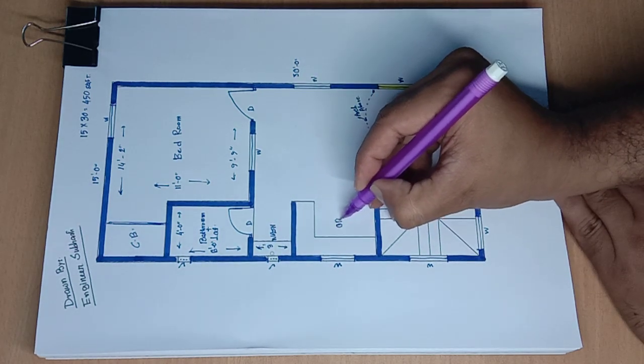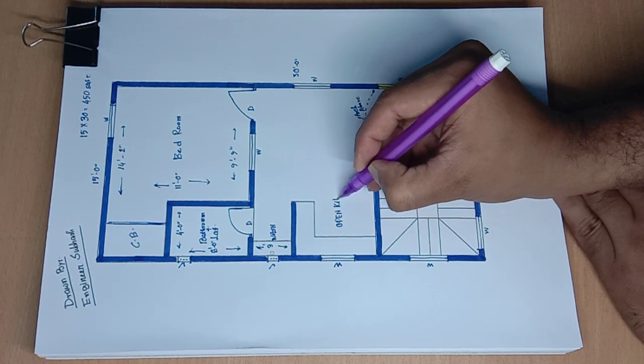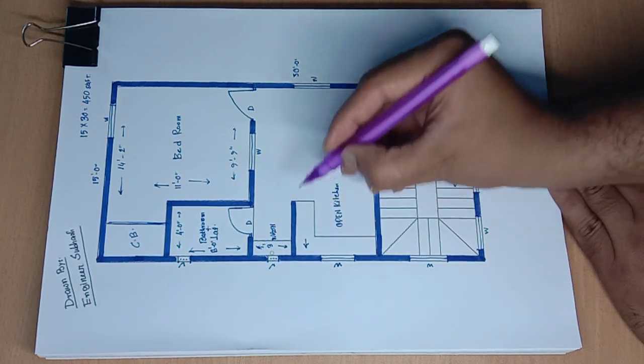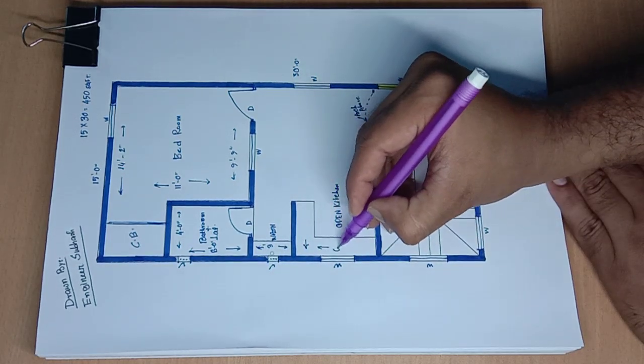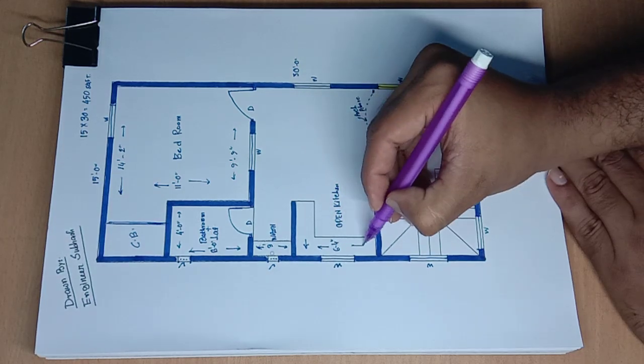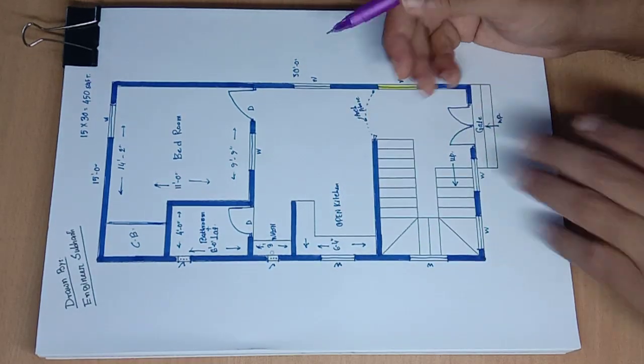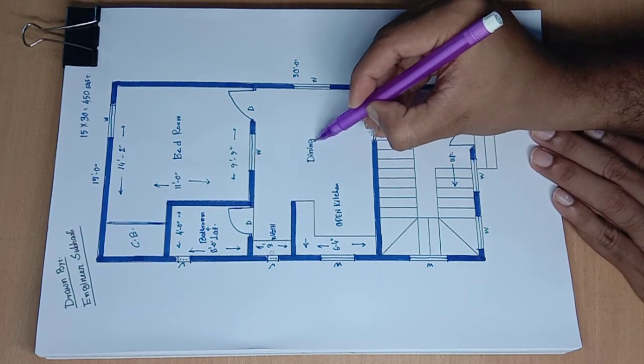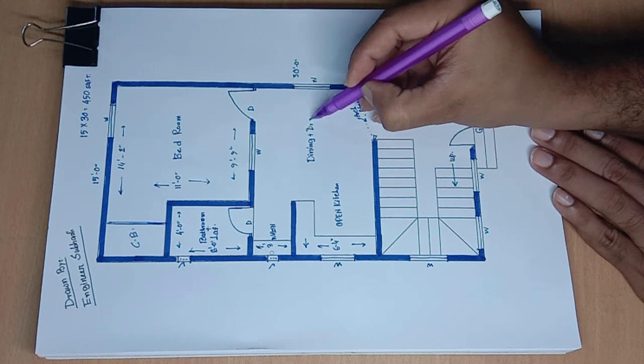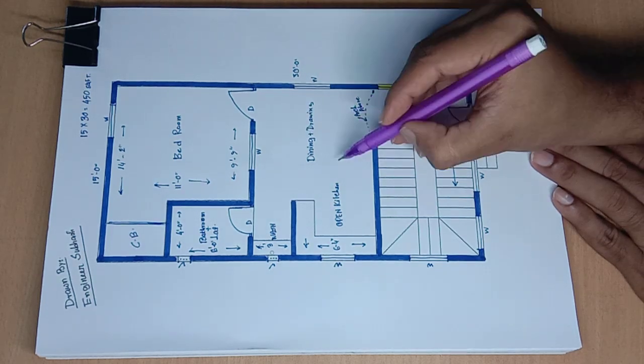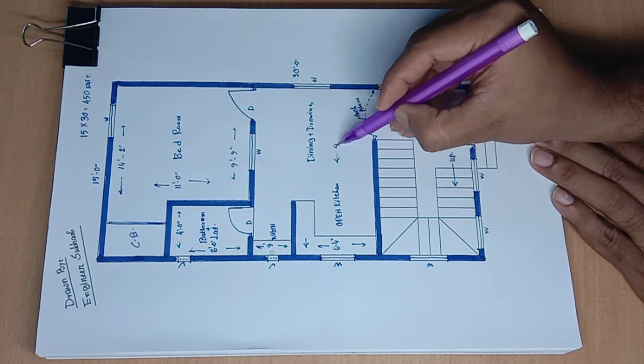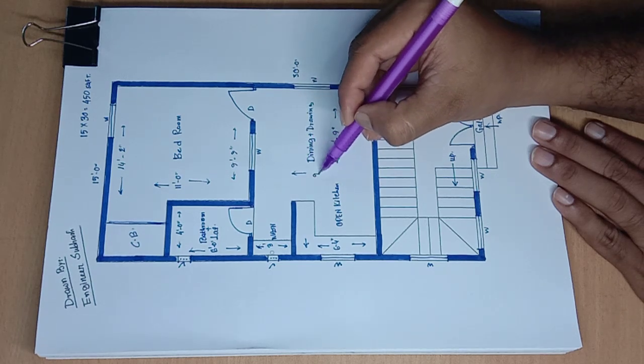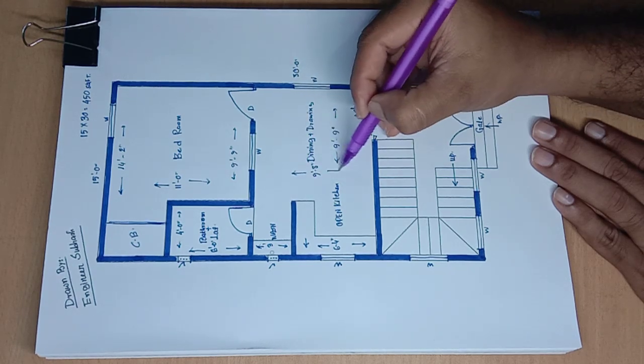Open kitchen, 6 feet 4 inch distance. Dining plus drawing, 9 feet 9 inch distance and 9 feet 8 inch distance.